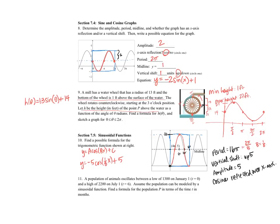Okay. The next one says a population of animals oscillates between a low of 1,300 on January 1st and a high of 2,200 on July 1st. So I can label all the months there and I can see that July 1st is at 6. And so I can put the max there and the min here.